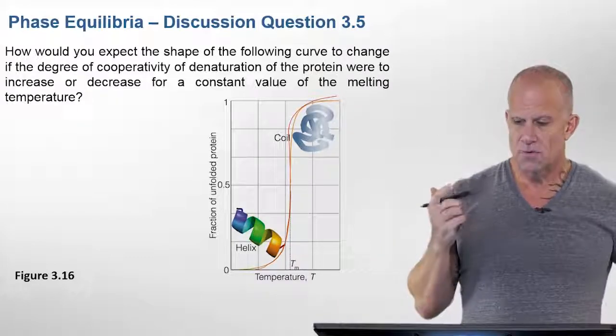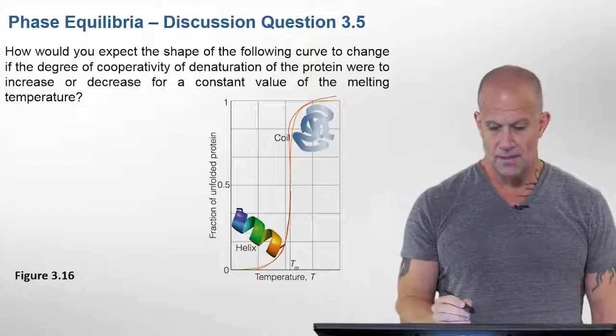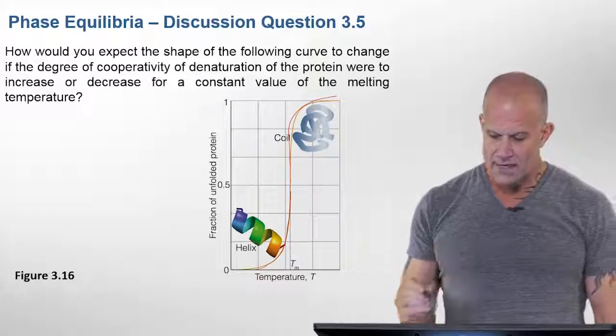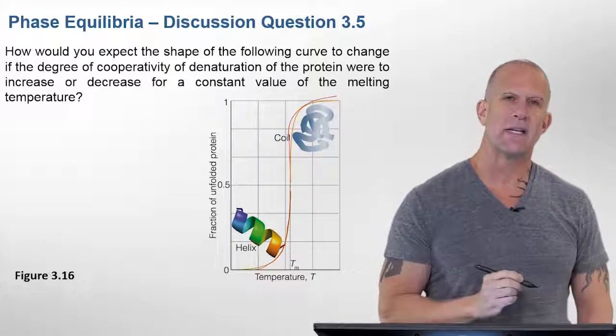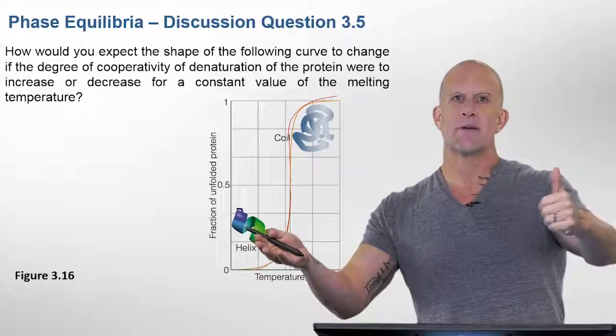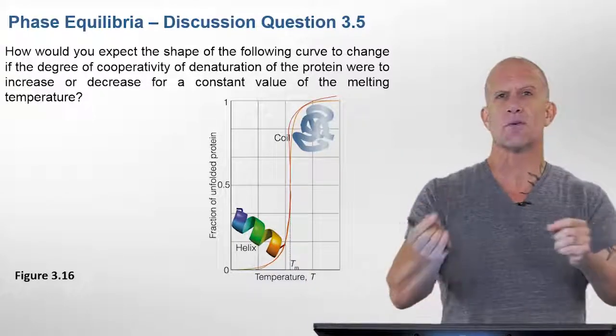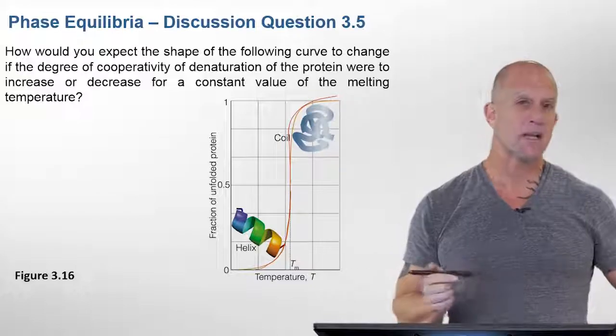So let's look specifically at this one in general, which is if we increase the cooperativity and made it in a sense, the limit of increased cooperativity is a true melting transition or a true first order phase transition.